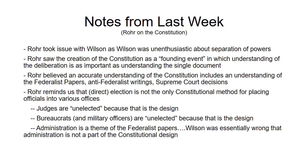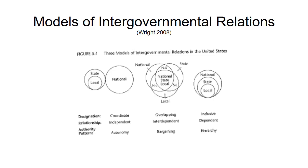So now let me get into some of these models of federalism. This is from the Wright 2008 reading. Wright has three models of intergovernmental relations: the coordinate relationship, the overlapping relationship, and the inclusive relationship. They're all framed in terms of circles.